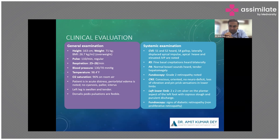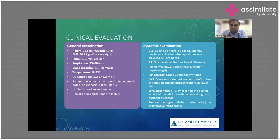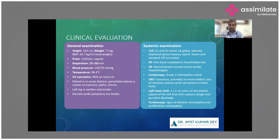When this patient came to the emergency department, evaluation showed a BMI of 26.7 — slightly overweight. The patient had tachycardia but regular pulse, which is important. Respiration was 25–28 per minute, slightly tachypneic. Blood pressure was maintained; the patient was afebrile; oxygen saturation was maintained. The patient was found to be acutely distressed, with pedal edema noted but no cyanosis or pallor. The left leg was swollen and tender, probably due to cellulitis, and the dorsalis pedis pulsation was feeble — a matter of concern.